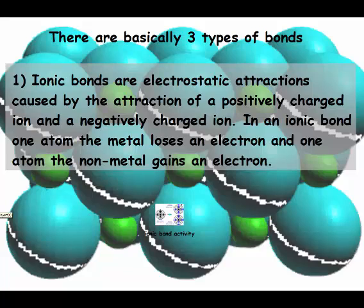There are three types of bonds. Ionic bonds are electrostatic attractions caused by the attraction of a positively charged ion and a negatively charged ion. In an ionic bond, one atom — the metal — generally loses an electron, and one atom — the nonmetal — gains an electron. So one atom is gaining and one is losing; an electron is transferred.